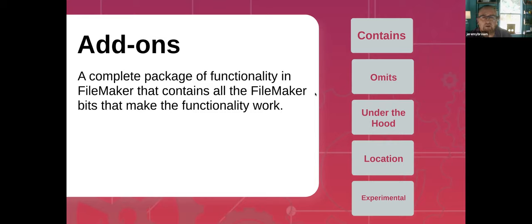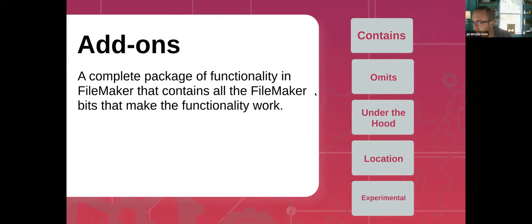Our definition of add-ons: a complete package of functionality in FileMaker that contains all the FileMaker bits that make the functionality work. Add-ons are just pieces of a FileMaker app — a collection of things. I liken this to what we think of as button bars or portals. Those things we draw and drag onto a layout, use for a specific purpose, and do some configuration with. Add-ons contain everything needed to run some functionality, like a picker, a calendar, or a star rating system.